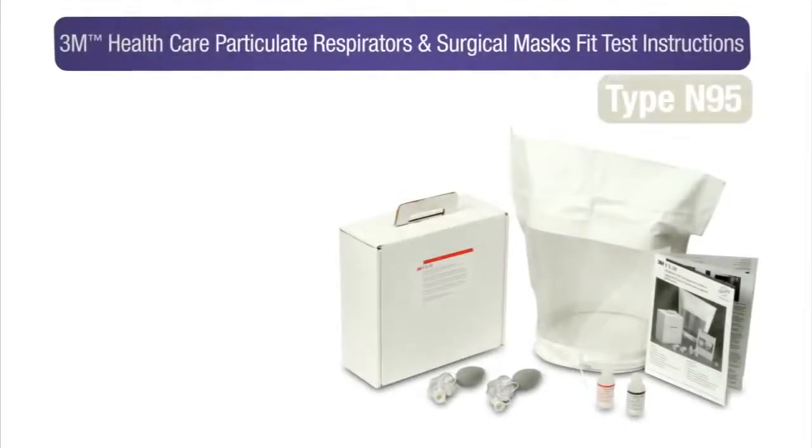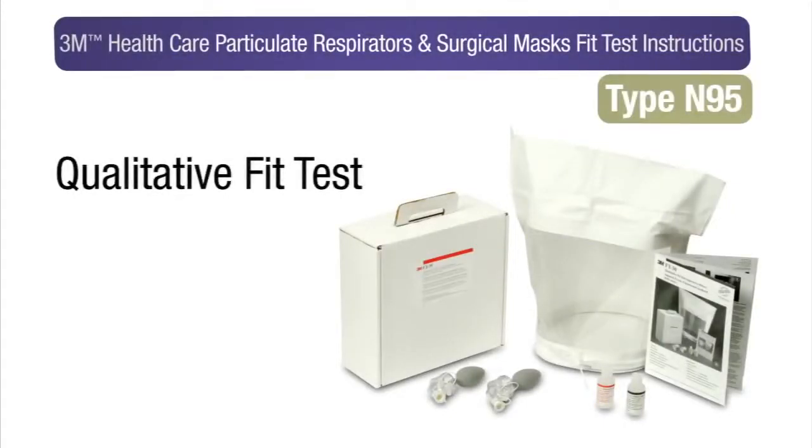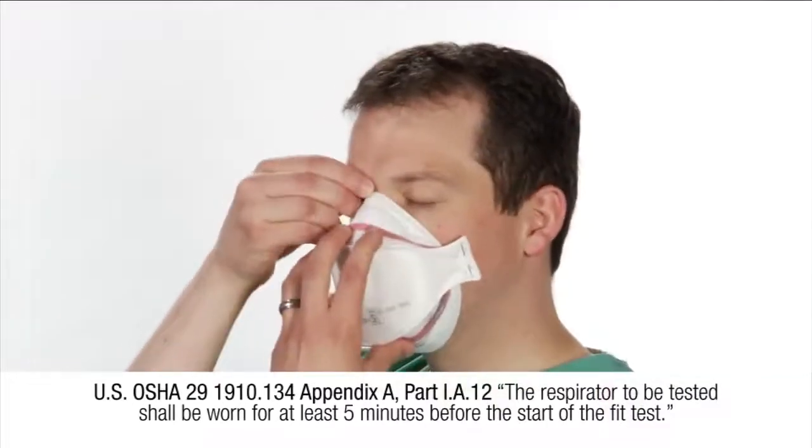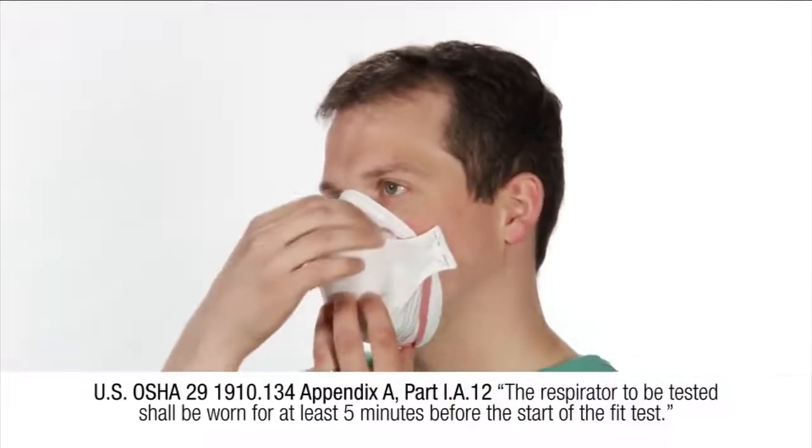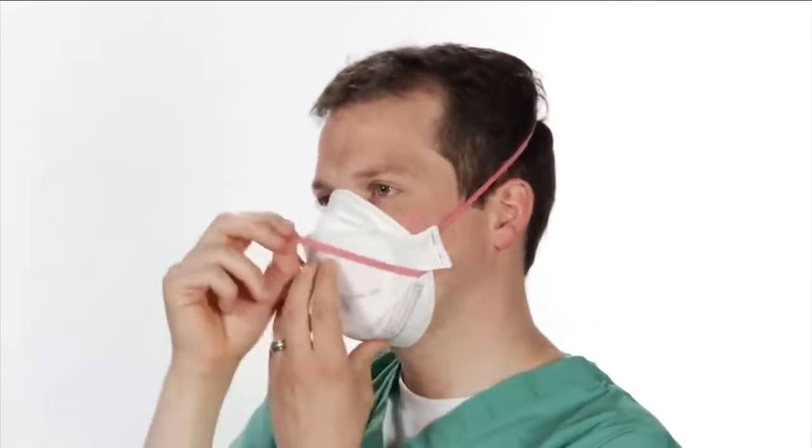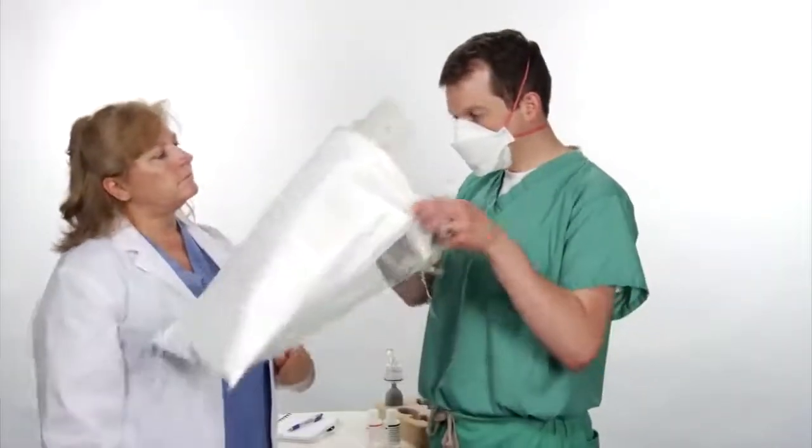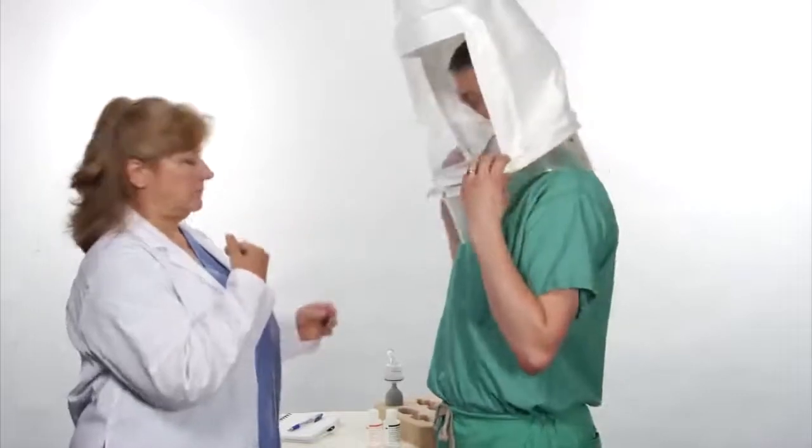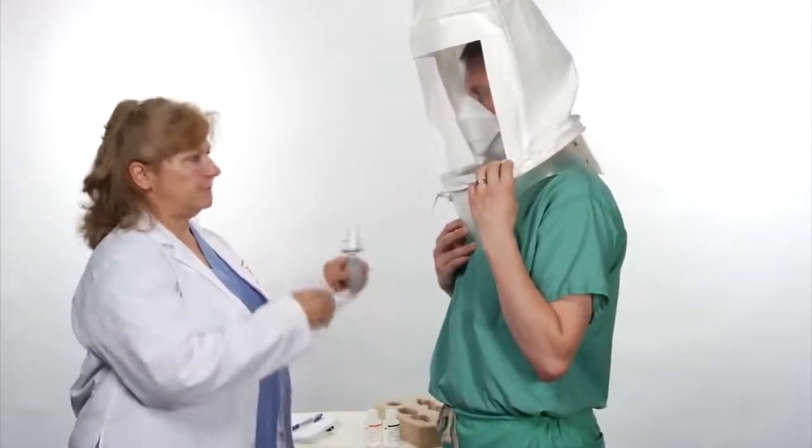You are now ready to conduct the fit test. According to OSHA, the respirator to be tested shall be worn for at least five minutes before the start of the fit test. This allows time for the wearer to ensure they can wear the respirator comfortably. Have the subject don and perform the user seal check as instructed in the fitting procedures for the specific respirator. We are using the 3M 1870 healthcare particulate respirator type N95 for demonstration purposes. Instruct the subject to place and position the test hood as before. Then have them breathe normally through their mouth with their tongue slightly extended.